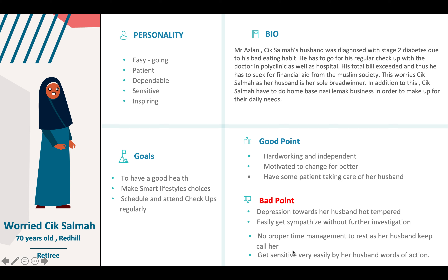Cheek Sama's husband was diagnosed with T2 diabetes due to his eating habits. He is unable to work and thus has to seek financial aid from the Muslim society. In addition, Cheek Sama has to do home-based food selling in order to make up for their daily needs. She also experiences depression towards her husband's condition.